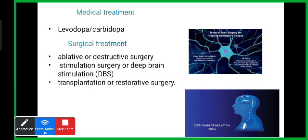There is also surgical treatment, though no cure. Three surgical procedures exist: ablation or destructive surgery, deep brain stimulation (DBS), and transplantation or restorative surgery. In ablation, the targeted area of the brain affected by Parkinson's disease is located and destroyed to eliminate abnormal chemical or electrical impulses causing tremors and other symptoms.